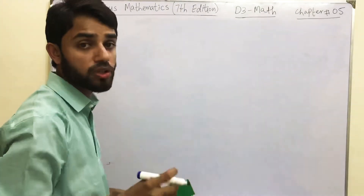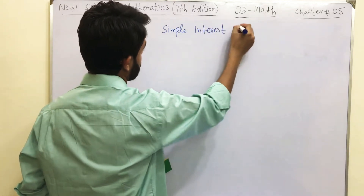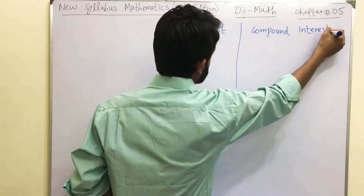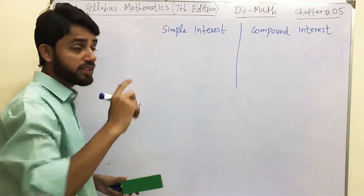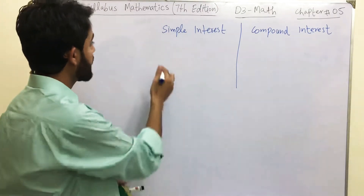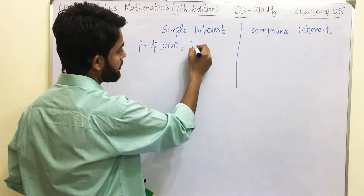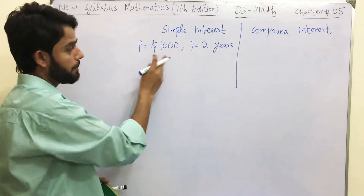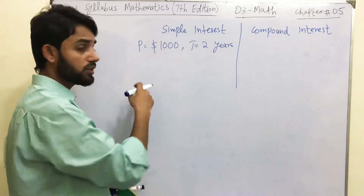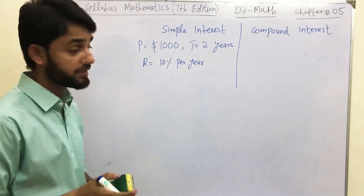Now I'm going to explain simple interest versus compound interest. The interest rate also depends upon the principal amount that you are depositing in the bank or borrowing as a loan. Let's suppose I am depositing $1000 as a principal amount to the bank, fixing that for two years. The bank says that since you are depositing $1000 and keeping it for two years, they are going to give you a profit rate of 10 percent per year.